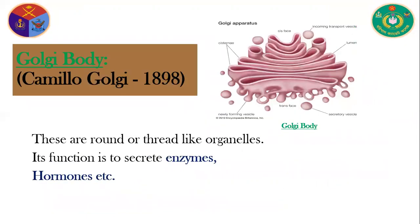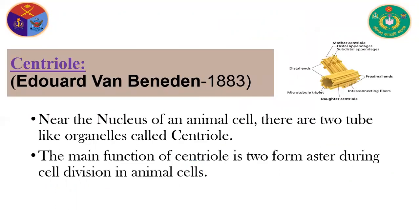Then, Golgi body. Camillo Golgi discovered it in 1898. These are round or sac-like organelles. Its function is to secrete enzymes and hormones. Then, centriole — near the nucleus of an animal cell, there are two tube-like organelles called centrioles. The main function of the centriole is to form the aster during cell division in animal cells.